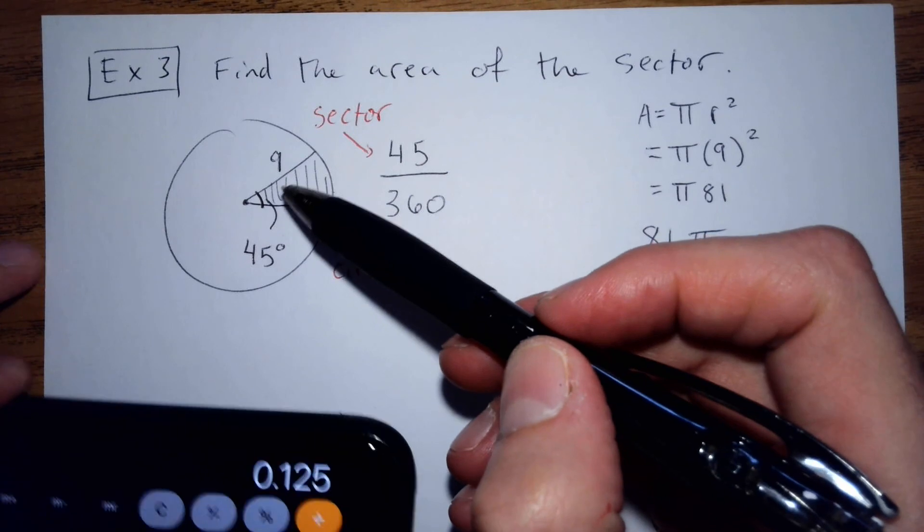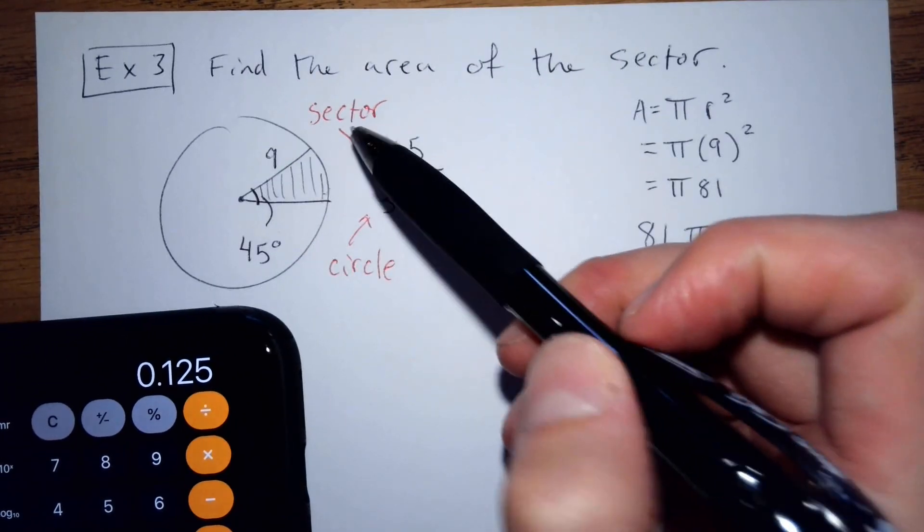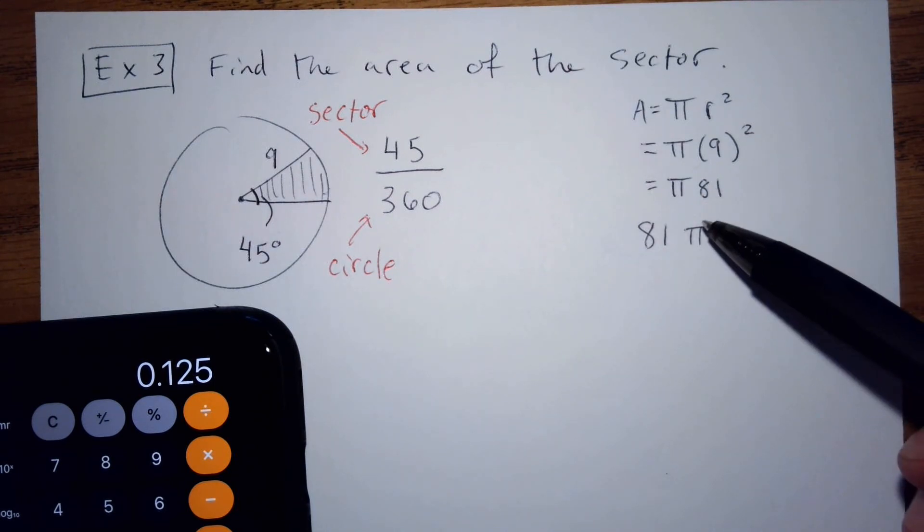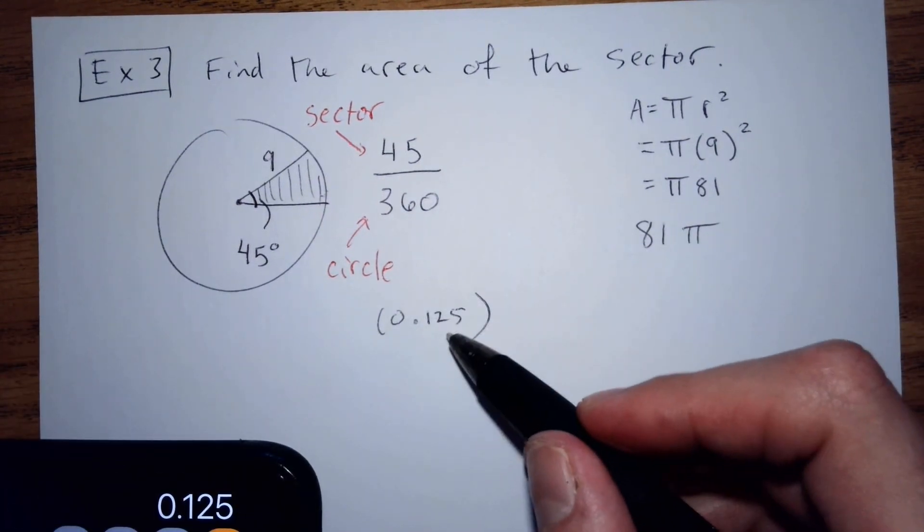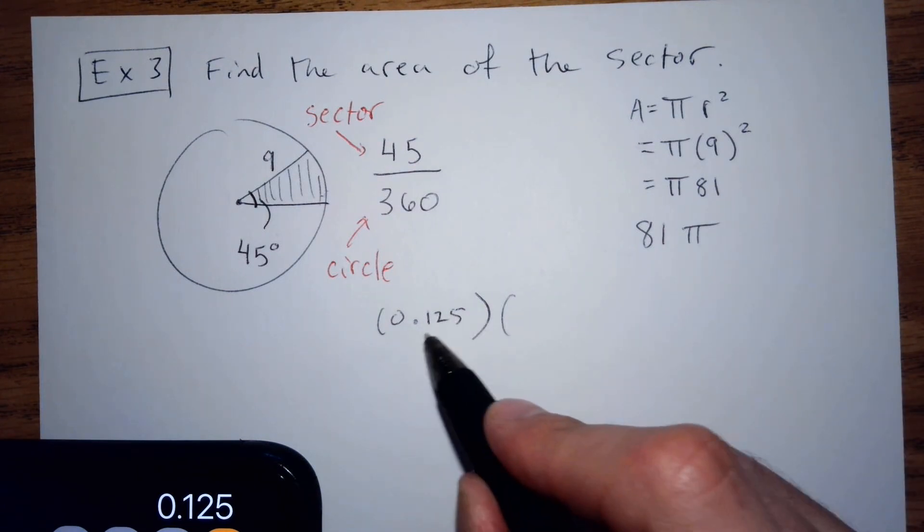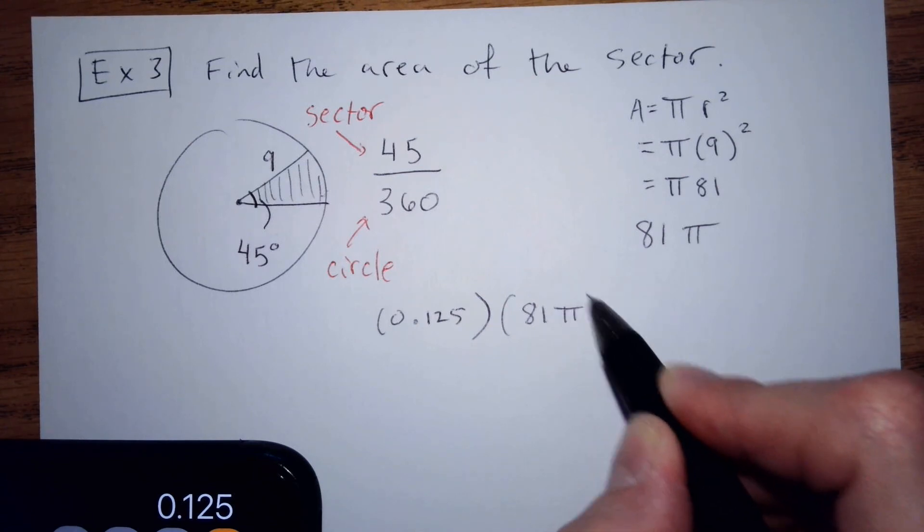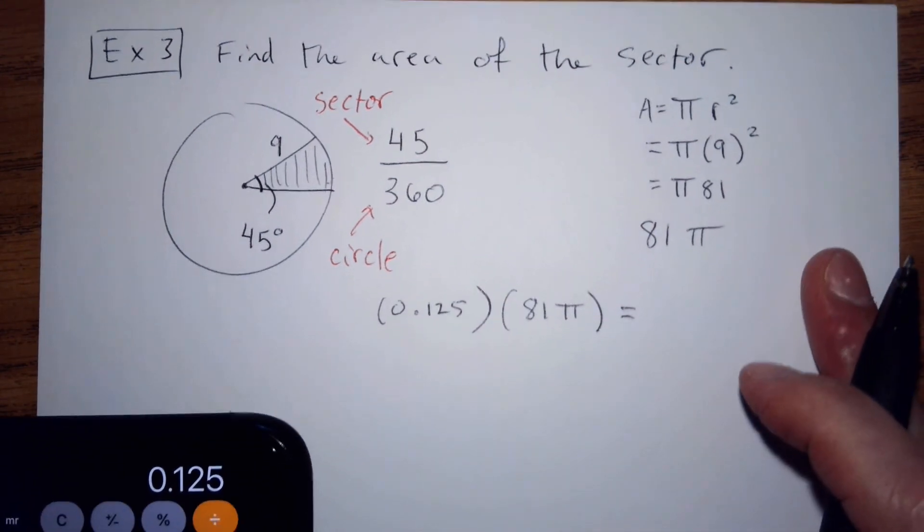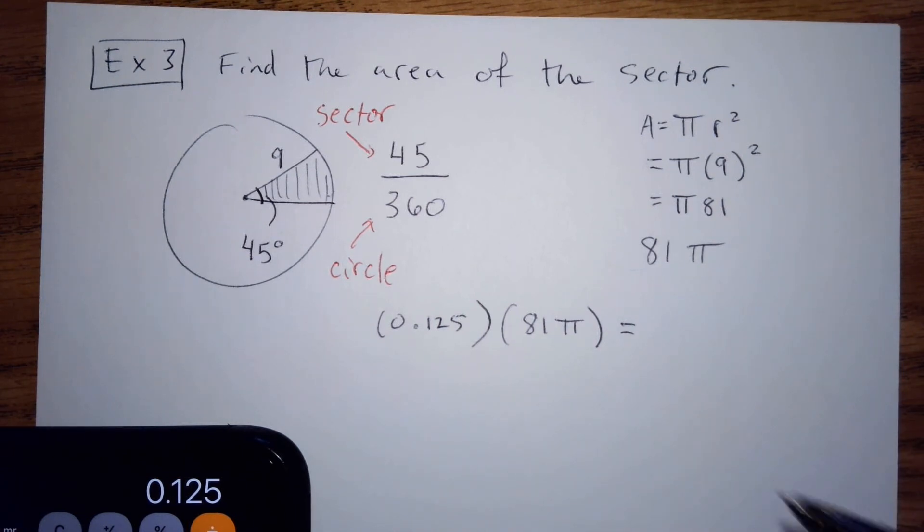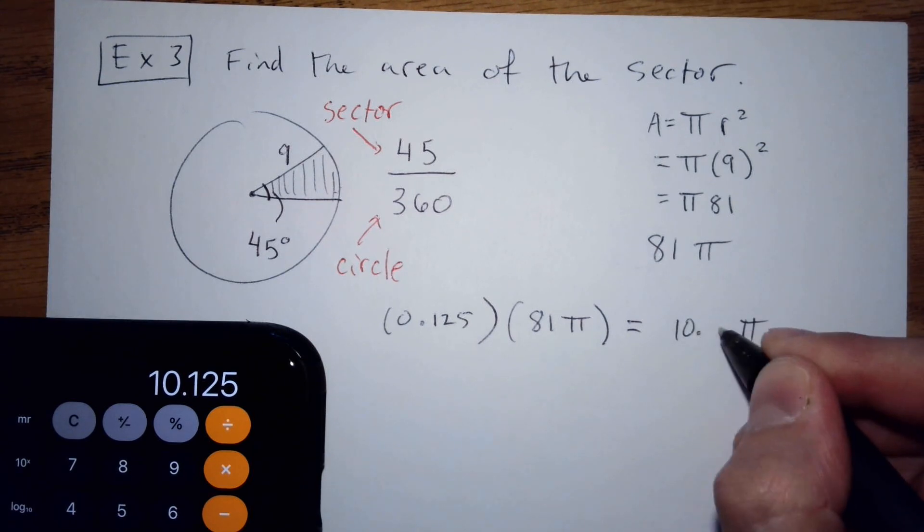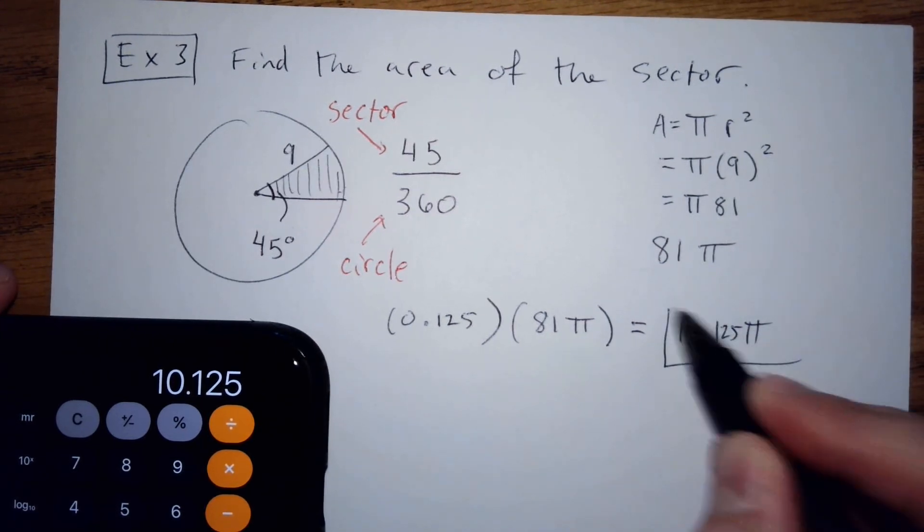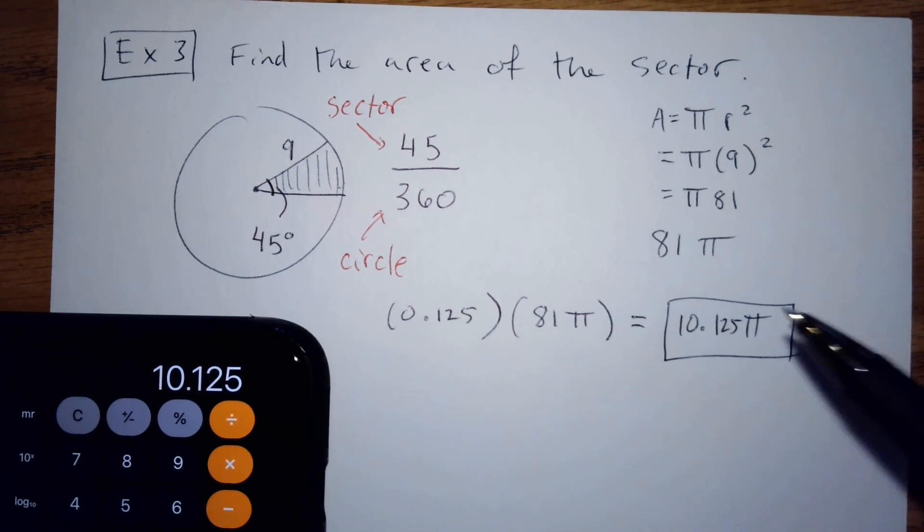Instead of having the entire area, 81 pi, what we're going to do is take 0.125, part of the circle, and multiply it by all of the area. So it's 0.125 of this 81 pi. I'm going to leave the pi there. In this case, we'll have decimals, but it's still a little bit cleaner. So I'll do 0.125 times 81, and that's going to be 10.125 times pi, units squared.